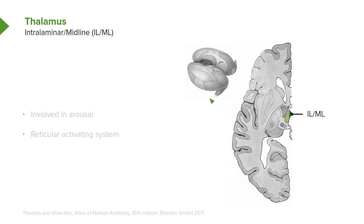This thalamic nuclear collection is the intralaminar/midline thalamic nuclei, shown on the medial side of the collection of thalamic nuclei. These are involved in arousal, and as a result they will be part of the activation of the reticular activating system.